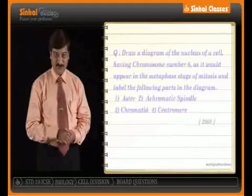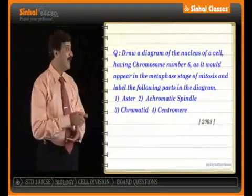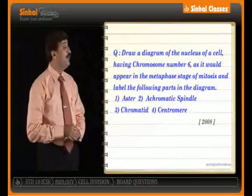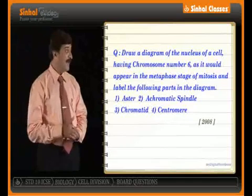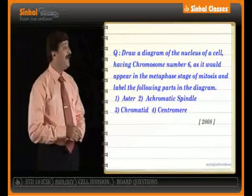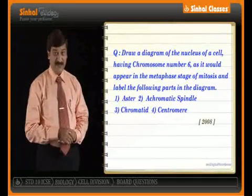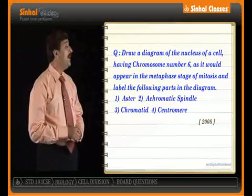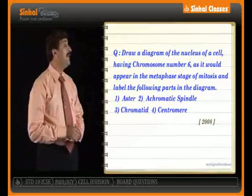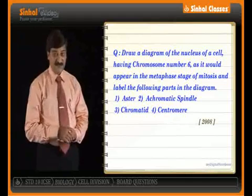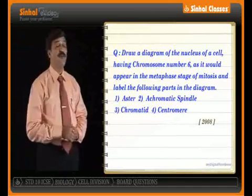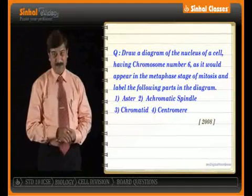On the monitor, the question for you. The question reads: draw a diagram of the nucleus of a cell having chromosome number 6 — the number 6 is important — as it would appear in the metaphase stage of mitosis, and label the following parts in the diagram.